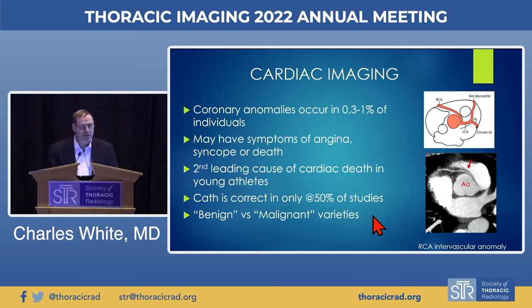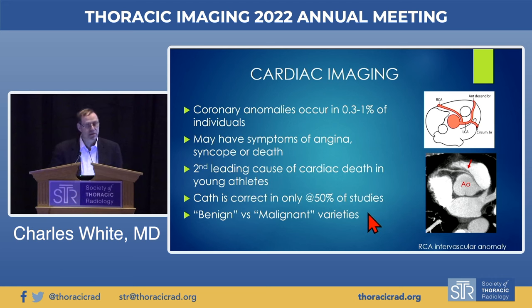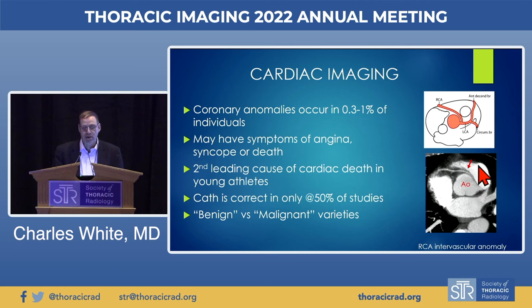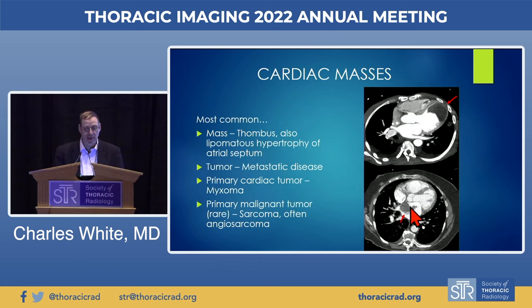Coronary anomalies are very important; they occur in up to 1% of individuals and can cause angina, syncope, or death. After hypertrophic cardiomyopathy, they are the second leading cause of cardiac death in young athletes. Catheterization is correct in only about 50% of cases. There are benign and malignant varieties. Here's a malignant variety of the RCA — if it goes between the aorta and pulmonary artery, that's a malignant variety. It arises from the wrong cusp, going between the great vessels — a malignant course with bad potential outcome.